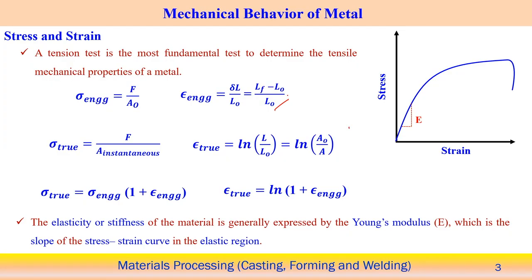Similarly, engineering strain can also be defined — it is what is the change of length with respect to the initial length of the component. Change of length means the final length after deformation minus the initial length, divided by the original length L0. That actually indicates the engineering strain.